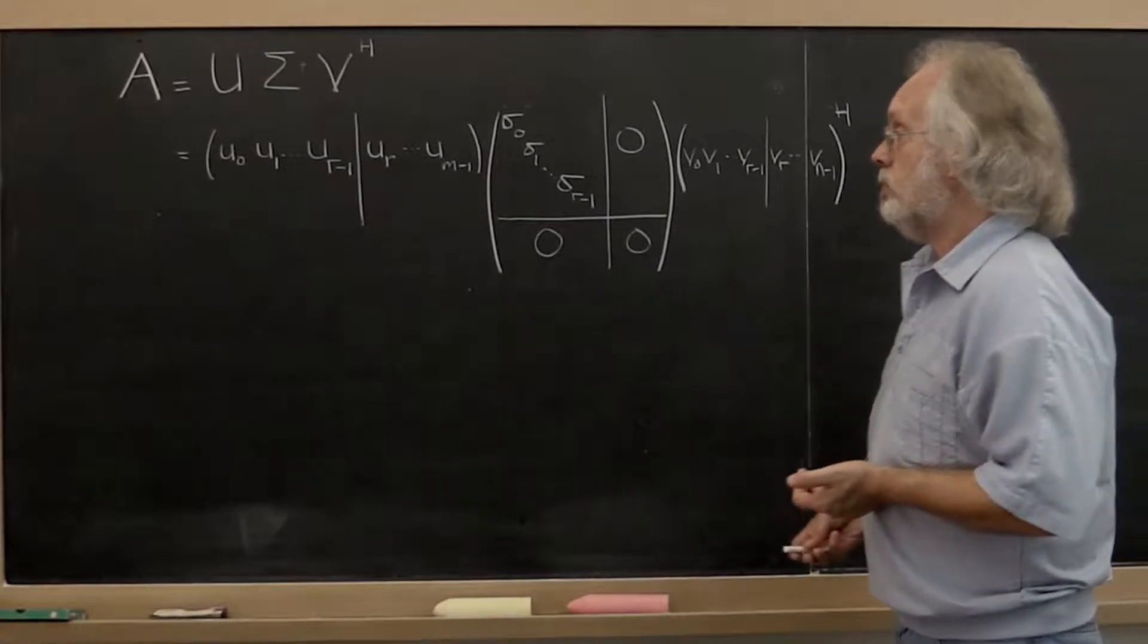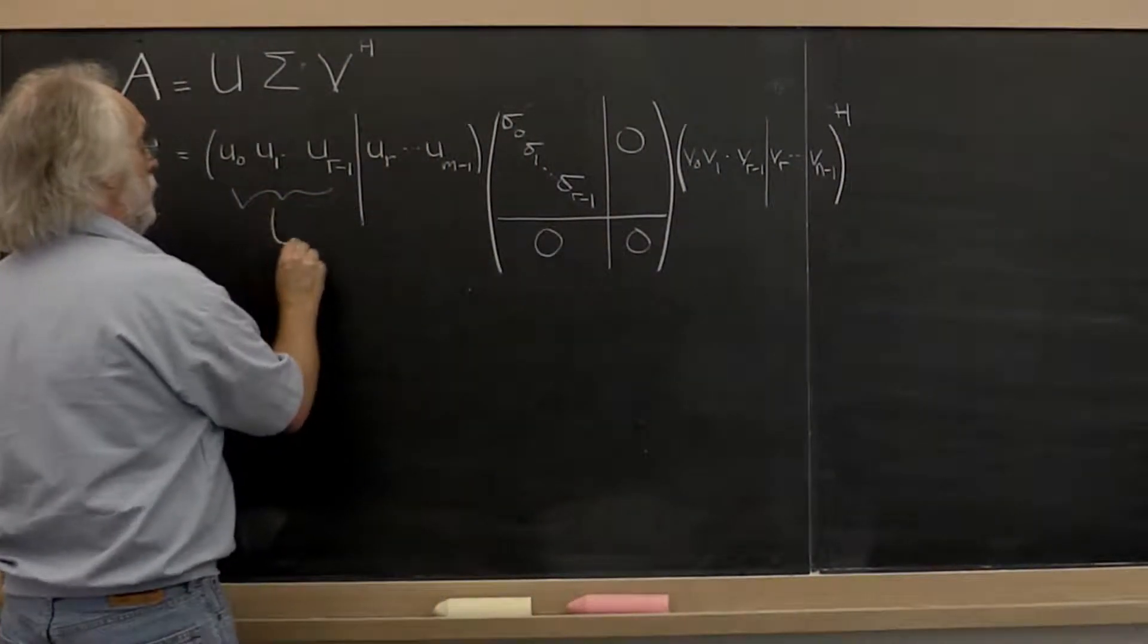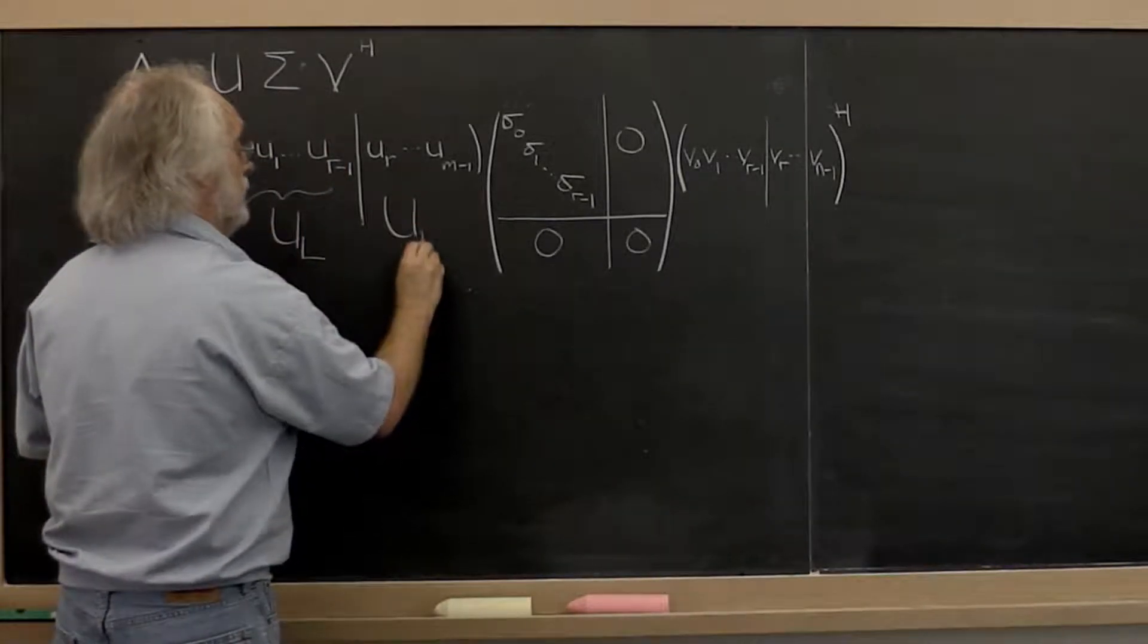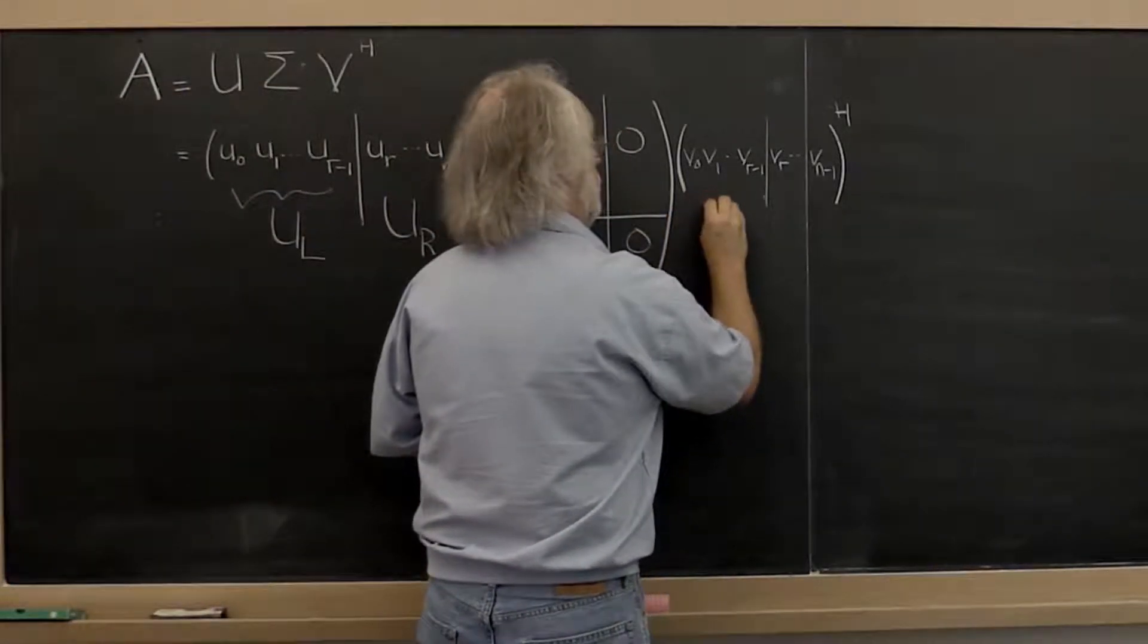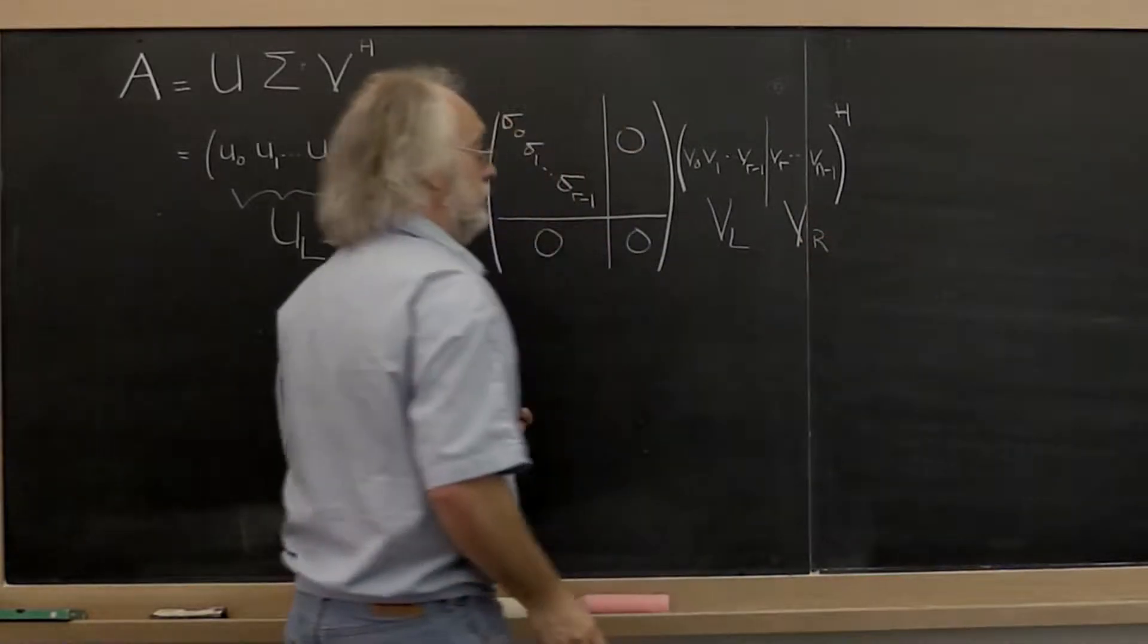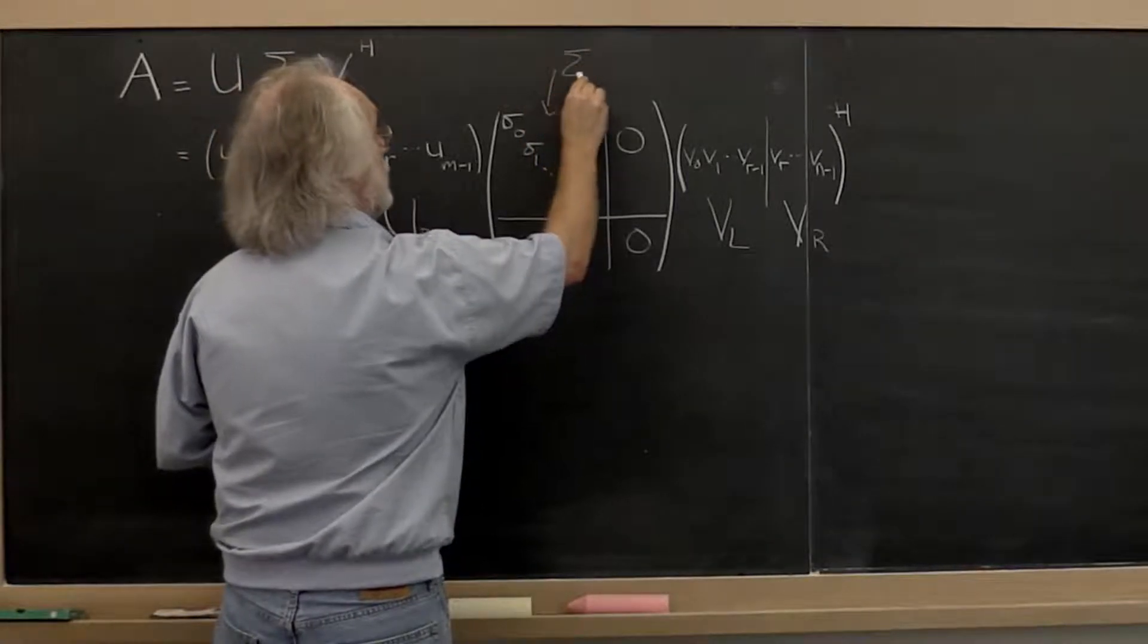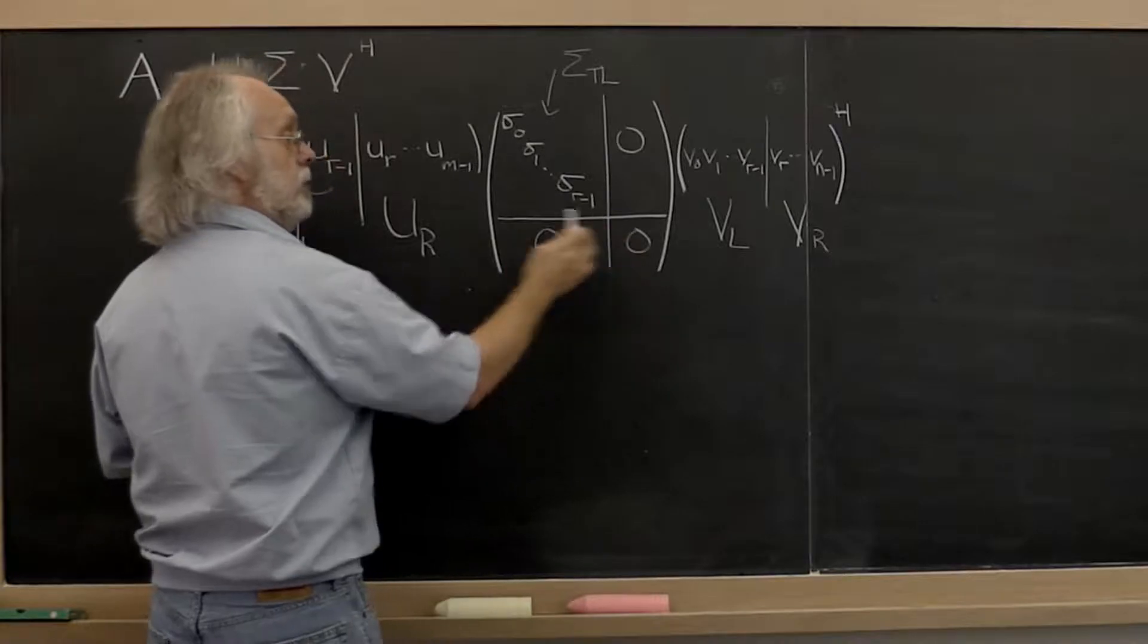And then we could label these. We could call this here U left, the left part of the partition matrix U, U right, V left, and V right. And then we could call this region here sigma top left where we have top left, top right, bottom left, bottom right.